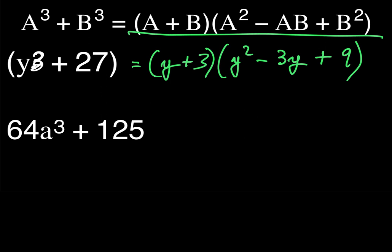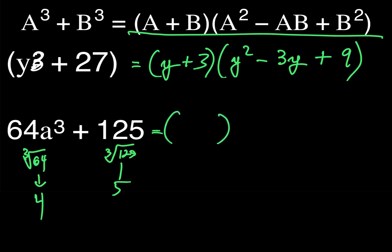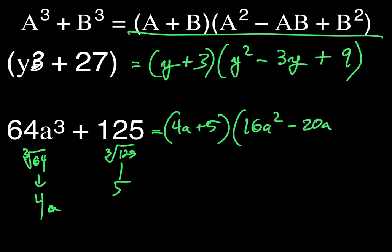For 64a cubed plus 125: the cube root of sixty-four is four, and the cube root of one hundred twenty-five is five. Plugging into the sum of cubes formula gives (4a plus 5)(16a squared minus 20a plus 25). Note that the trinomial factor itself is not factorable further, so once you reach that form, you're done.